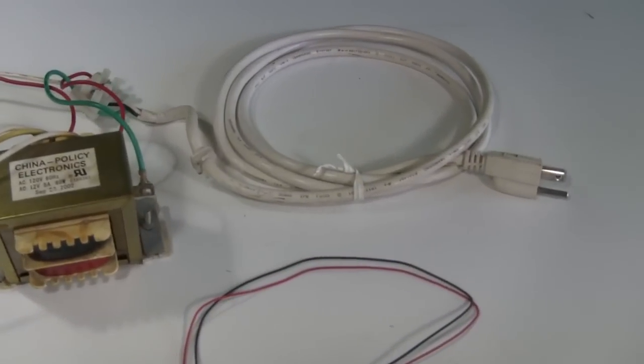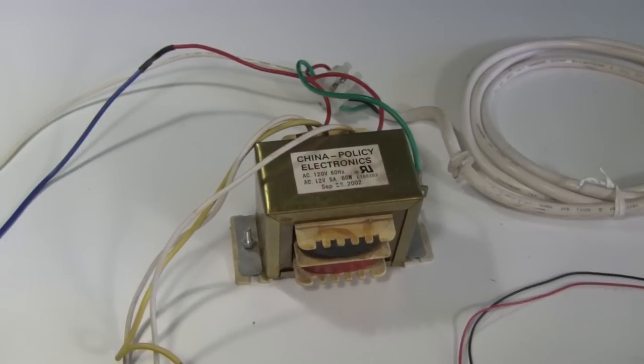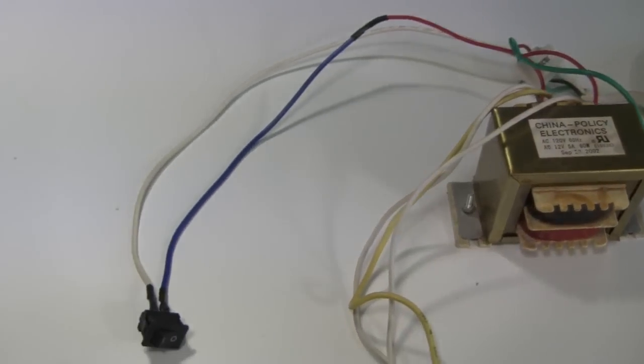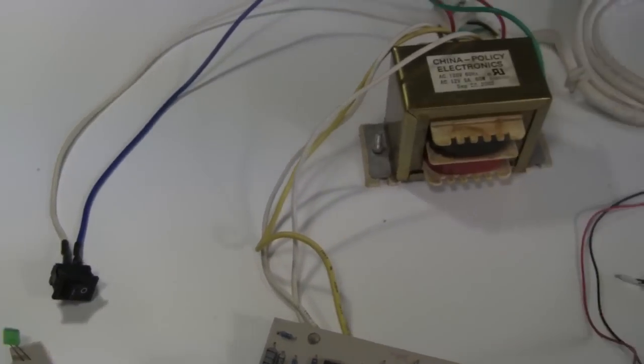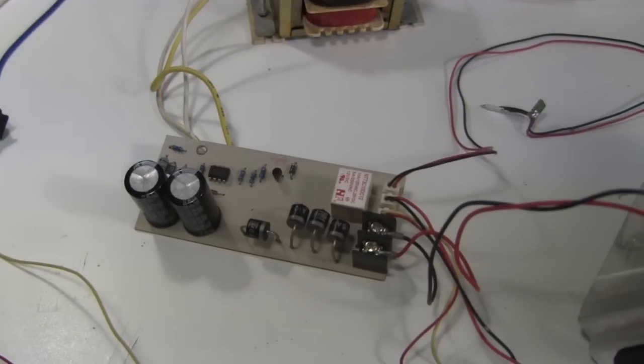The power cord, the transformer for converting from 120 volts AC to 12 volts AC, and a convenient on-off switch. That powers this control board, which converts the 12 volts AC to 12 volts DC and does some other stuff.